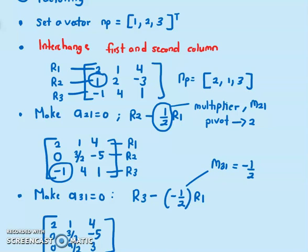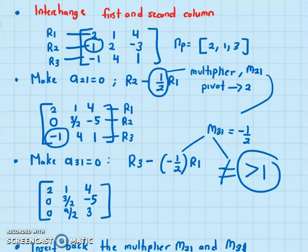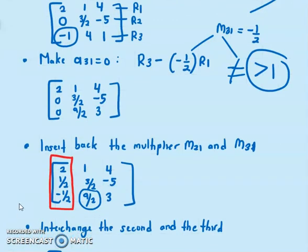Using the Gauss elimination approach, every operation to make a21 zero — for example, r2 minus half r1 — gives us the multiplier m21 = 1/2, which we must store. Similarly, making a31 zero uses r3 minus (negative 1/2) r1, giving another multiplier. Remember, the multiplier cannot be bigger than one.